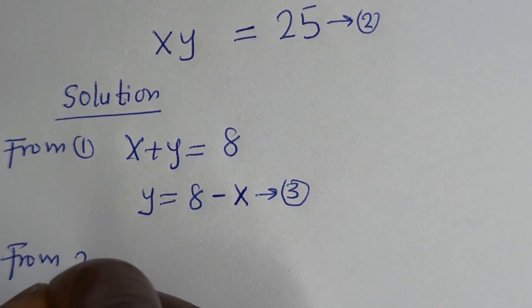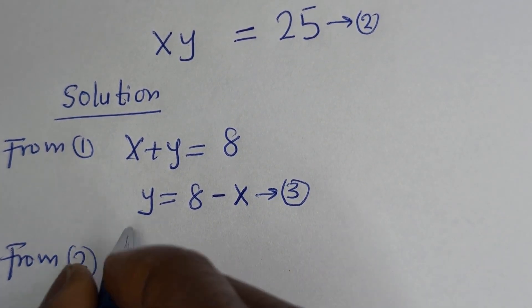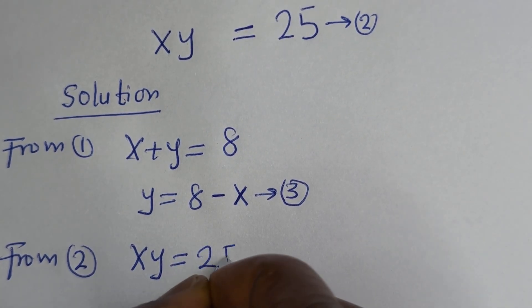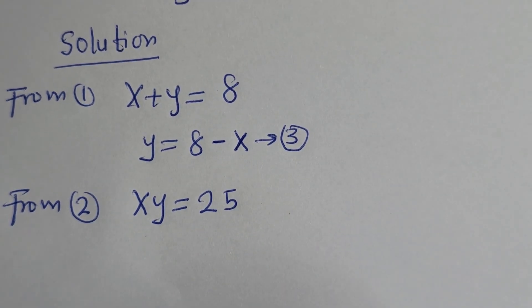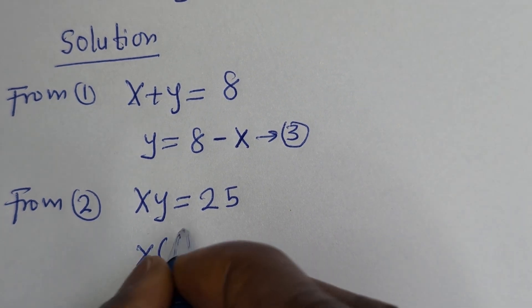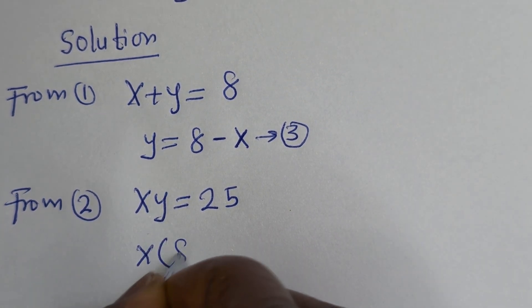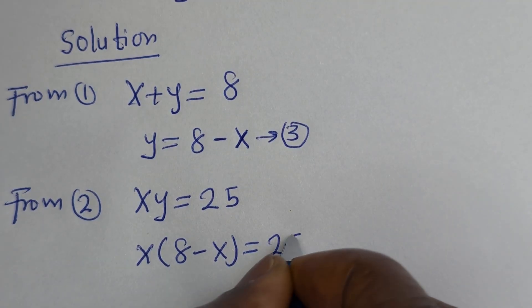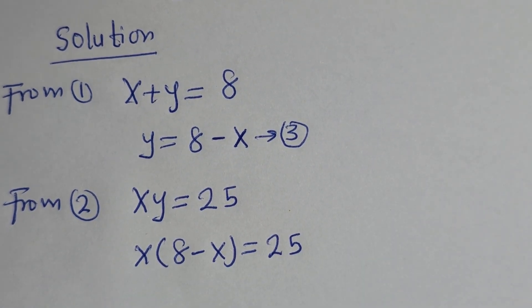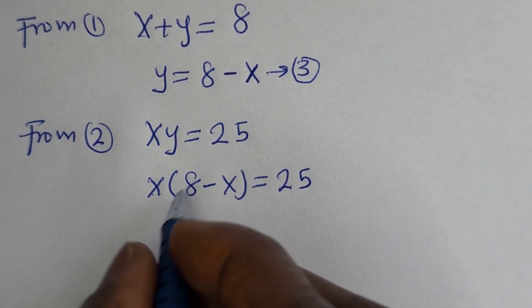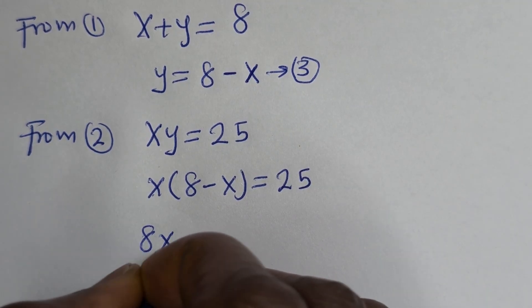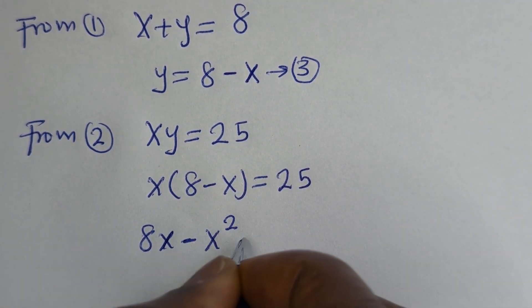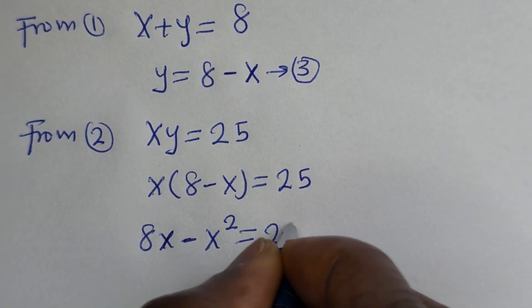From equation 2, S times Y is equal to 25. Substituting equation 3, S multiplied by (8 minus S) is equal to 25. Expanding: 8S minus S squared is equal to 25.